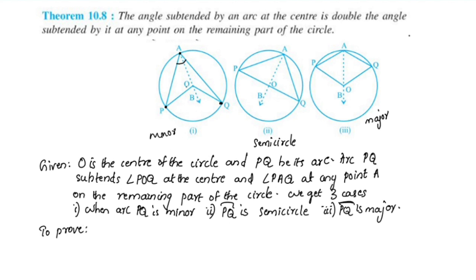We will prove that angle POQ is equal to 2 times angle PAQ. To prove this, we make triangle AOQ. Angle BOQ is the exterior angle of triangle AOQ.